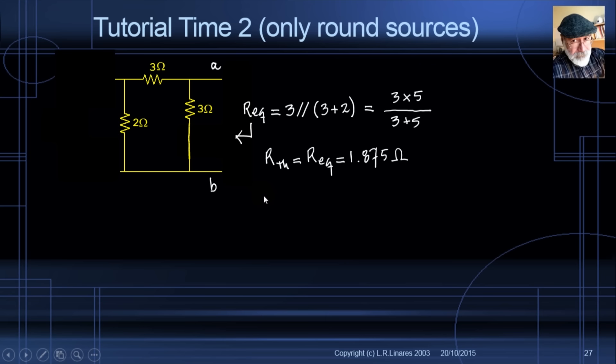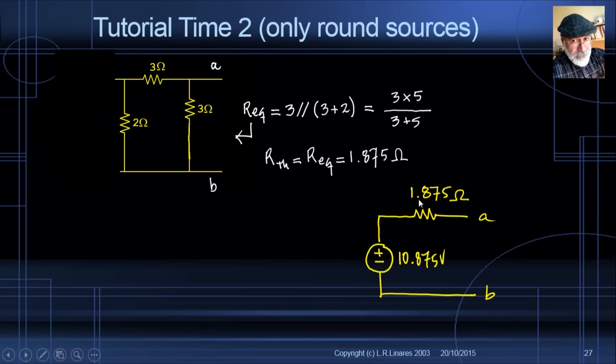The Thevenin-Helmholtz equivalent circuit for the original circuit has V_TH = 10.875 volts and R_TH = 1.875 ohms.